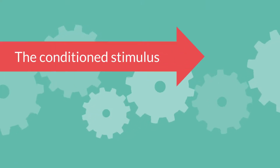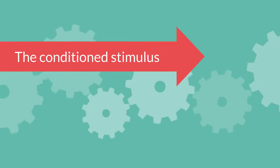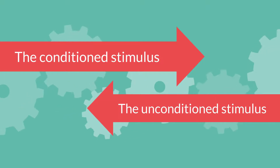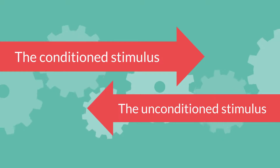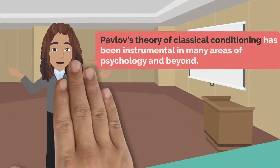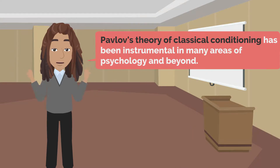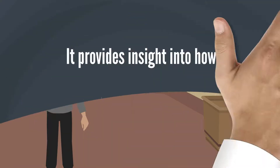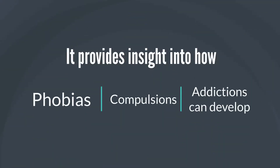The conditioned stimulus must occur immediately before the unconditioned stimulus, and the pairing must be consistently repeated to establish the association. Pavlov's theory of classical conditioning has been instrumental in many areas of psychology and beyond. It provides insight into how phobias, compulsions, and addictions can develop.